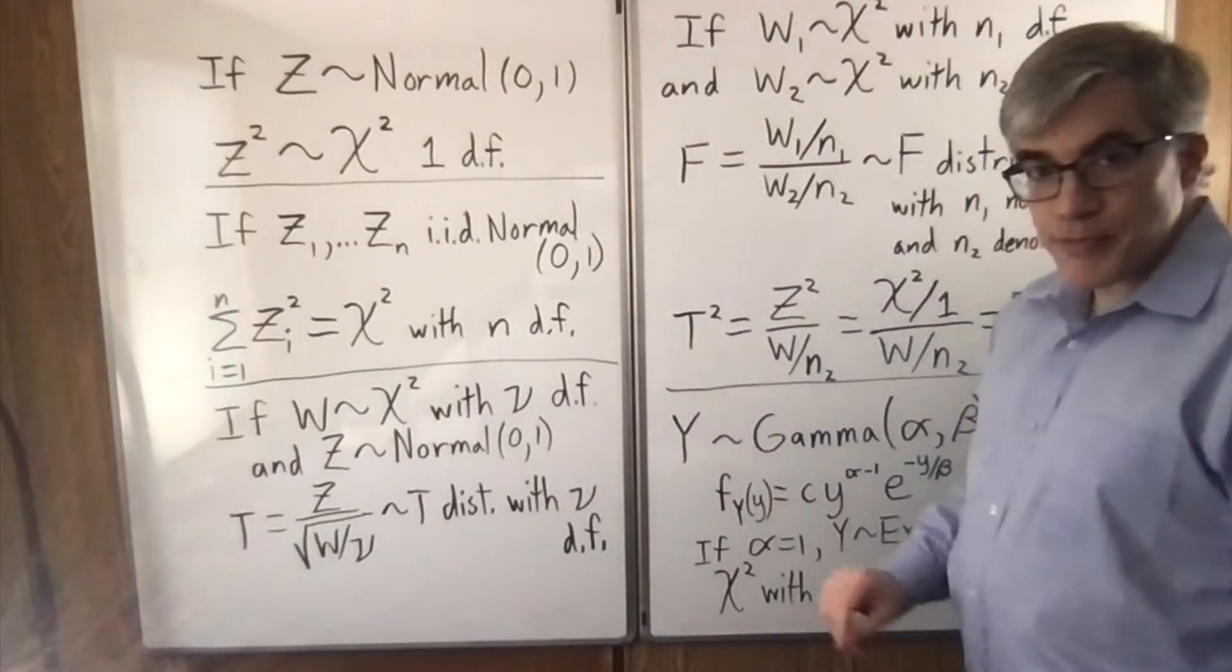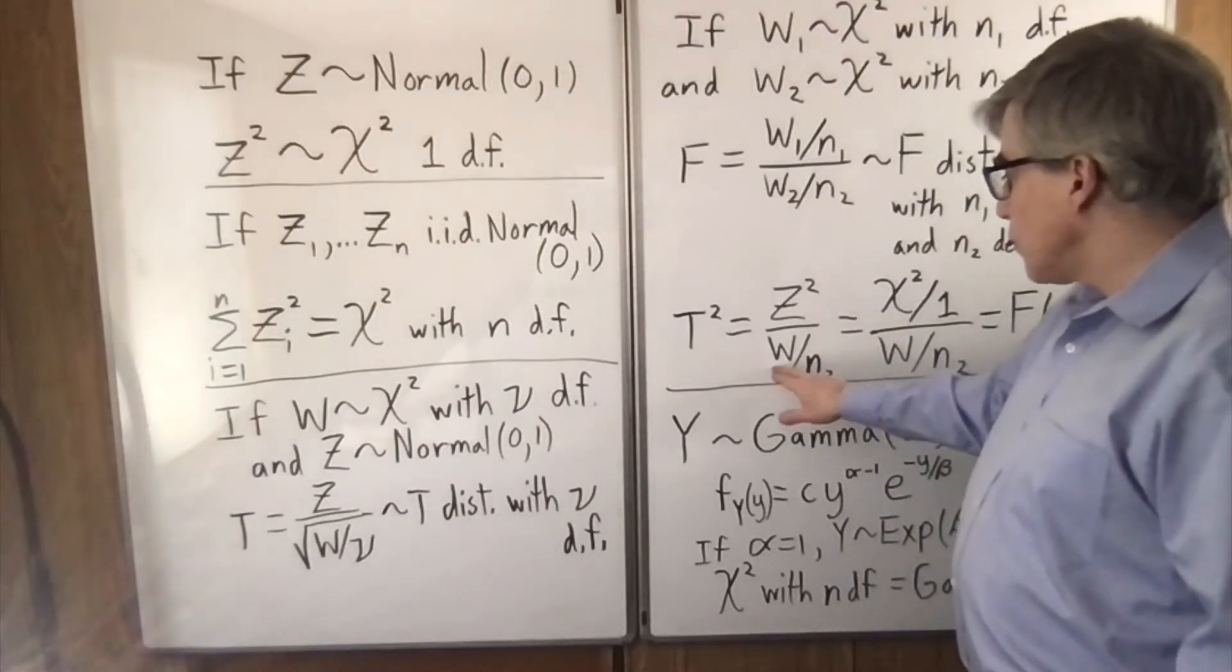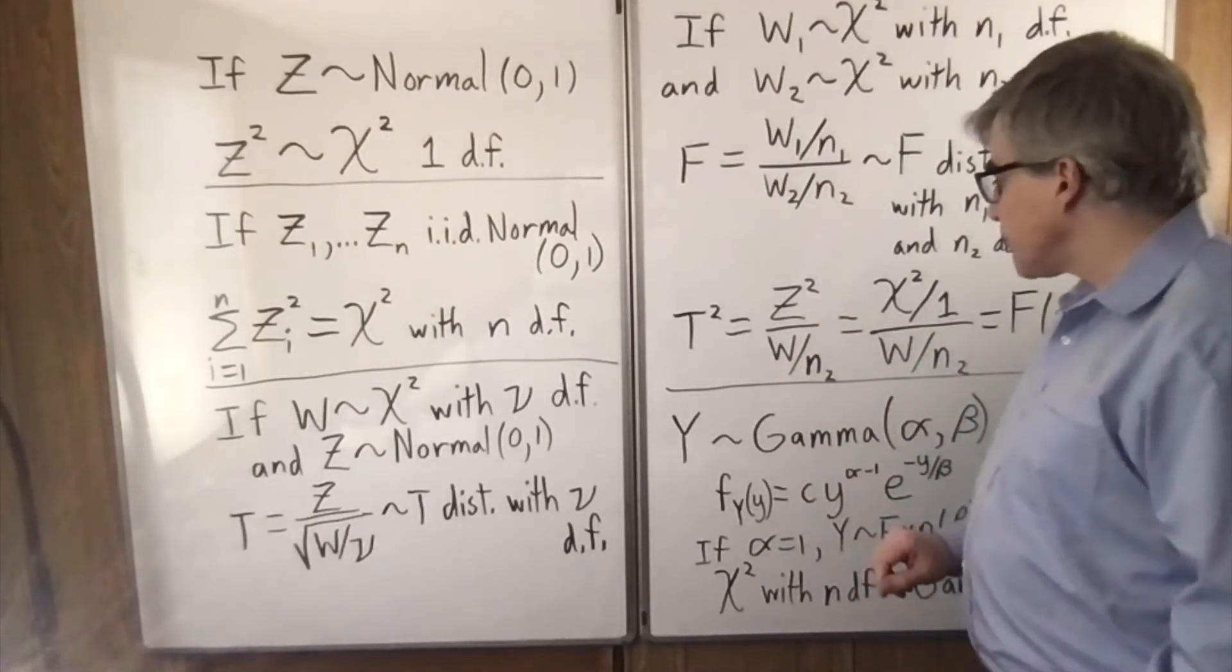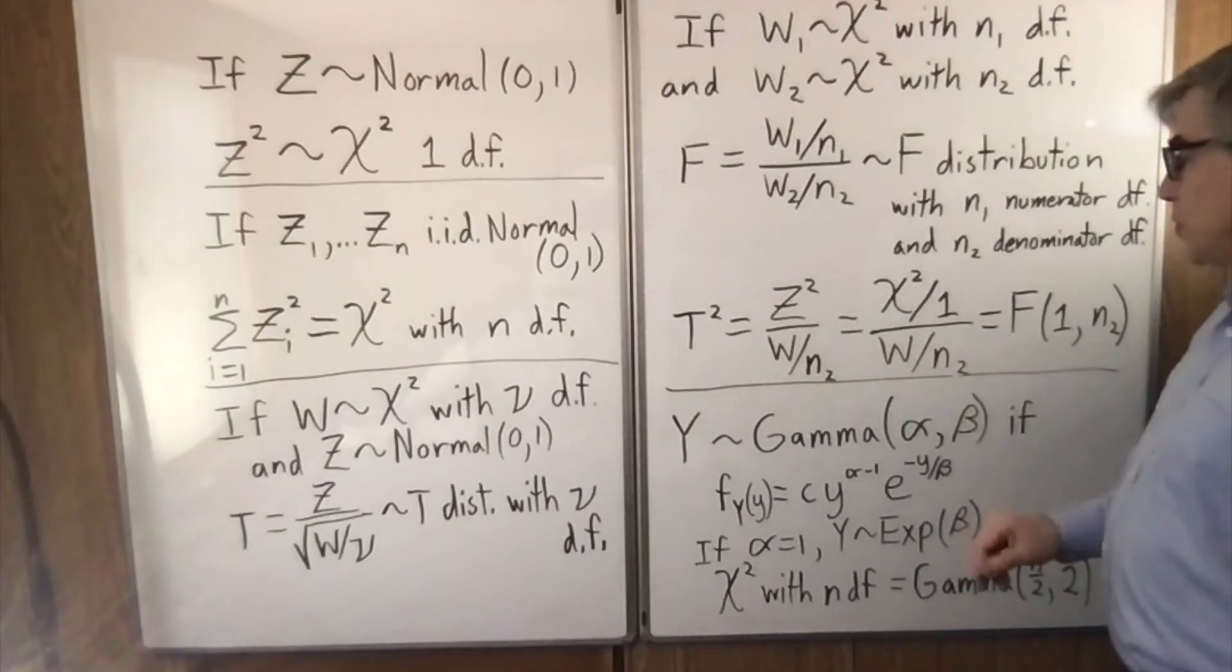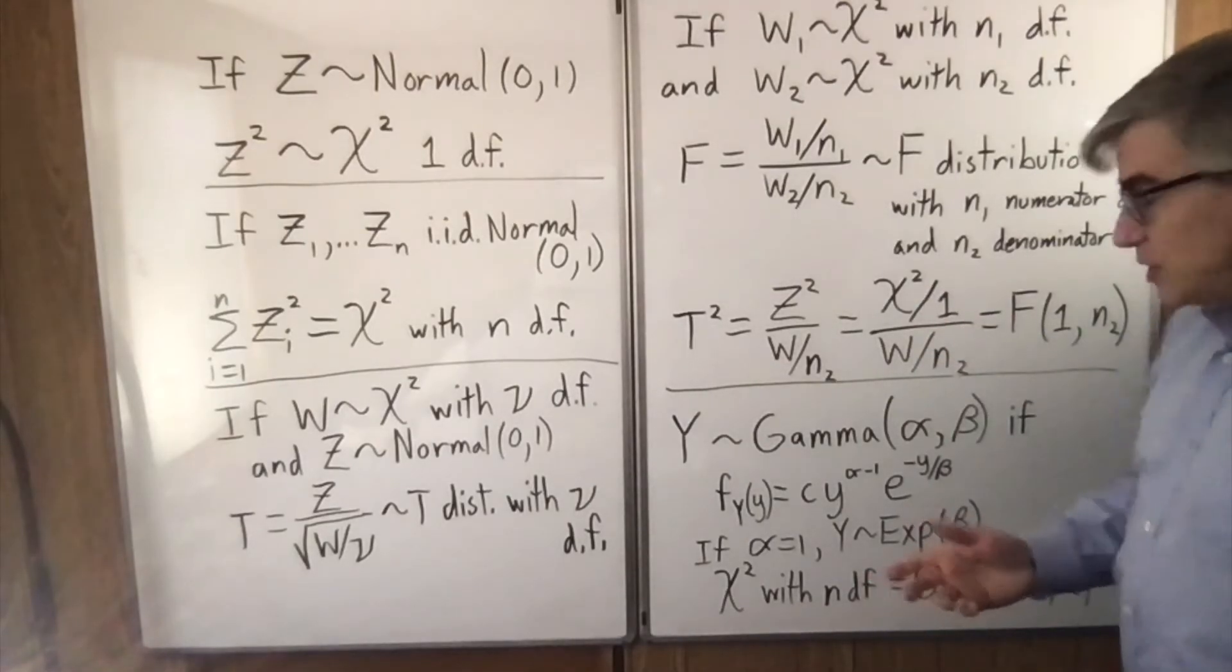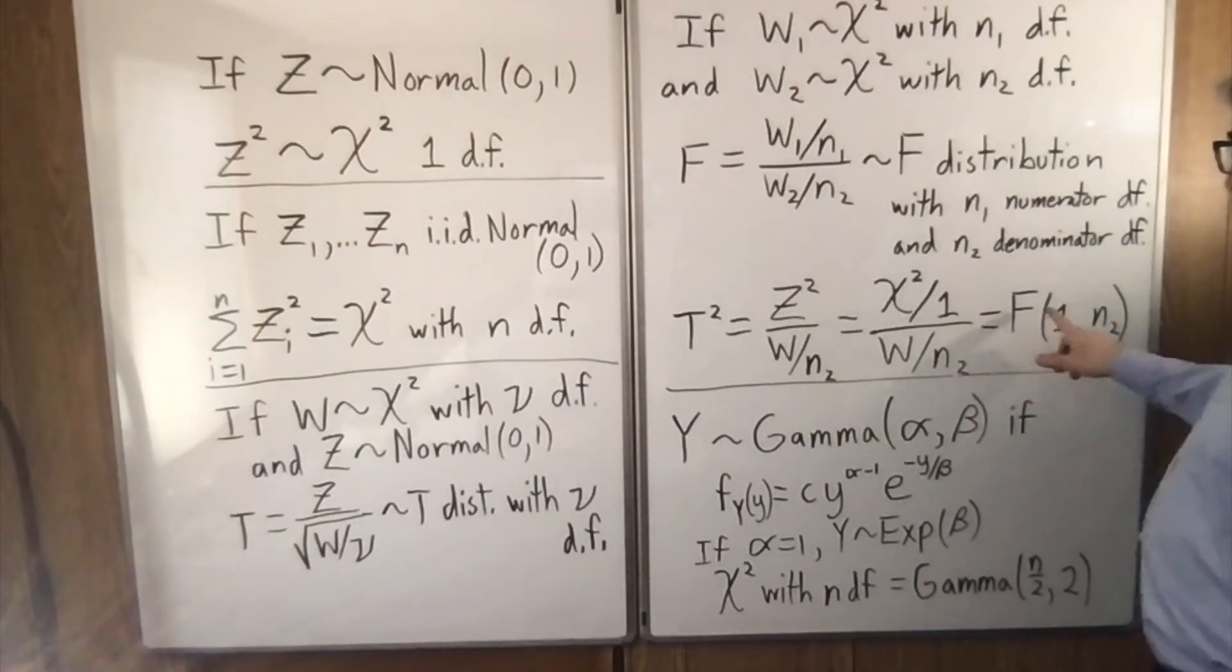Based on all that, if you look at t-squared, you would get z-squared over w over n2. And z-squared is a chi-square with one degree of freedom and you can divide it by one and w over n2. So that is, by definition, an f-distribution with one numerator degree of freedom and n2 denominator degrees of freedom.